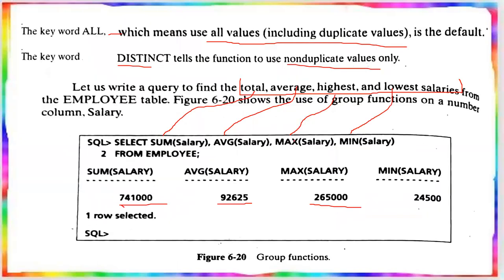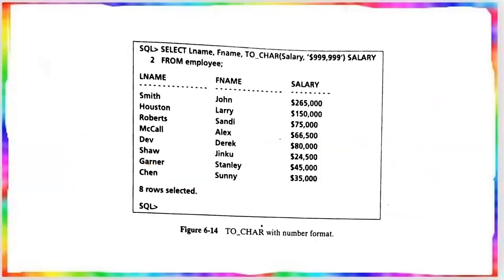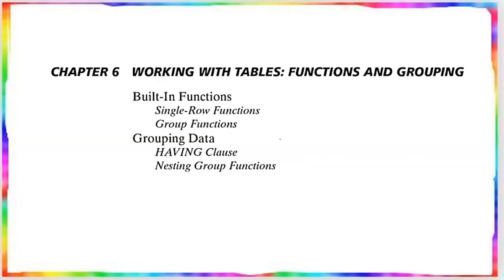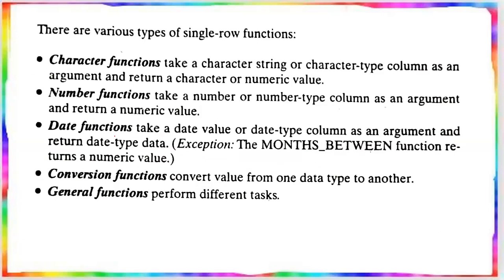In summary, single row functions and group functions are not the same. Single row functions cover character, number, date, conversion, and general functions like NVL, NVL2, COALESCE, NULLIF, DECODE, and CASE. Group functions perform operations on a set of rows and return one result. Hope you understand and are clear from the previous two classes.